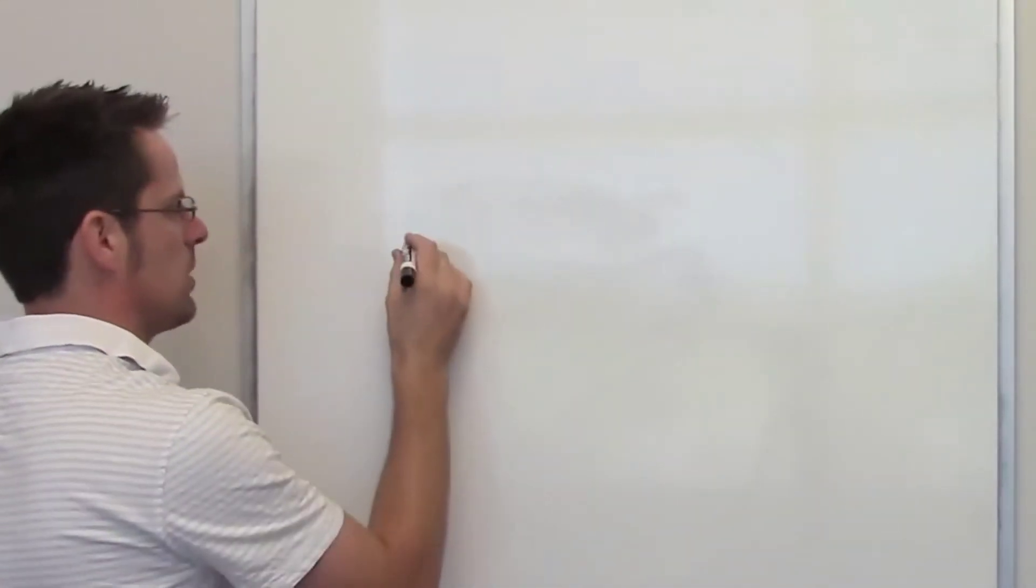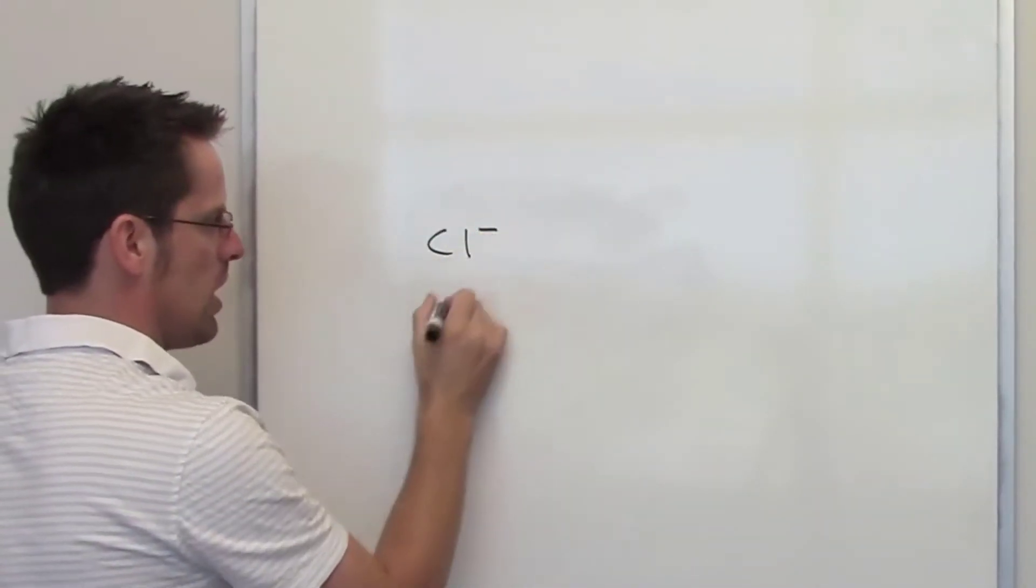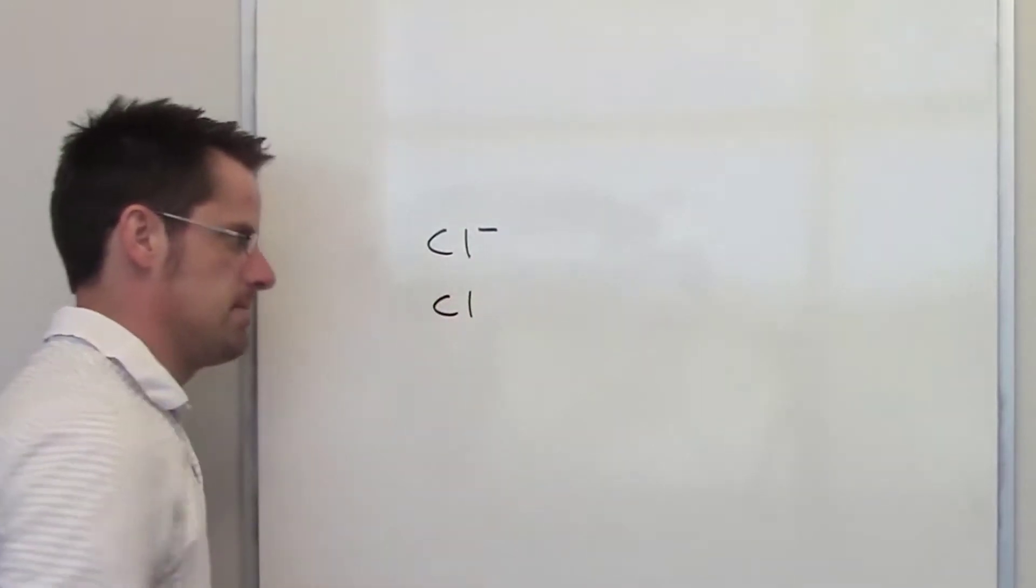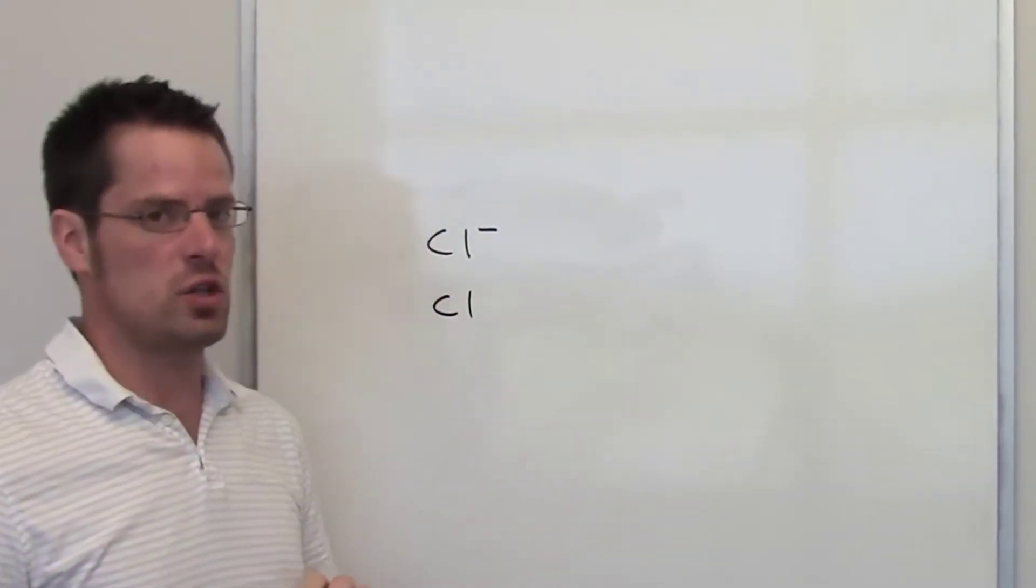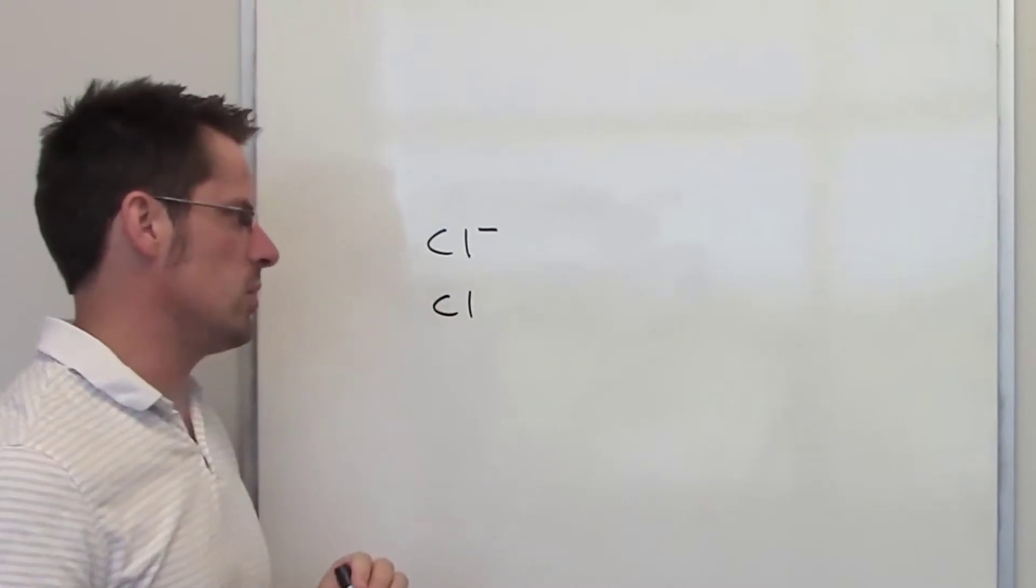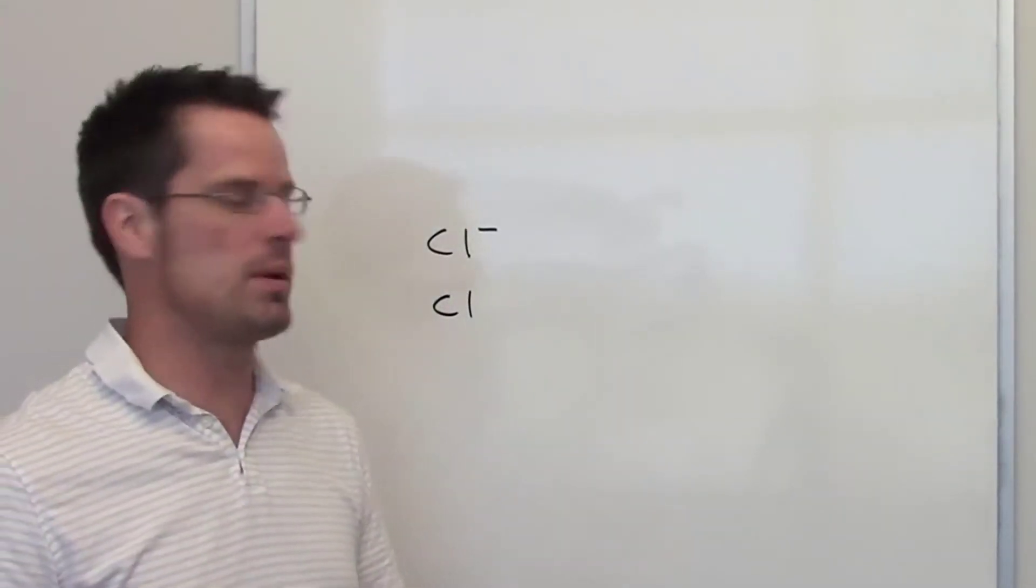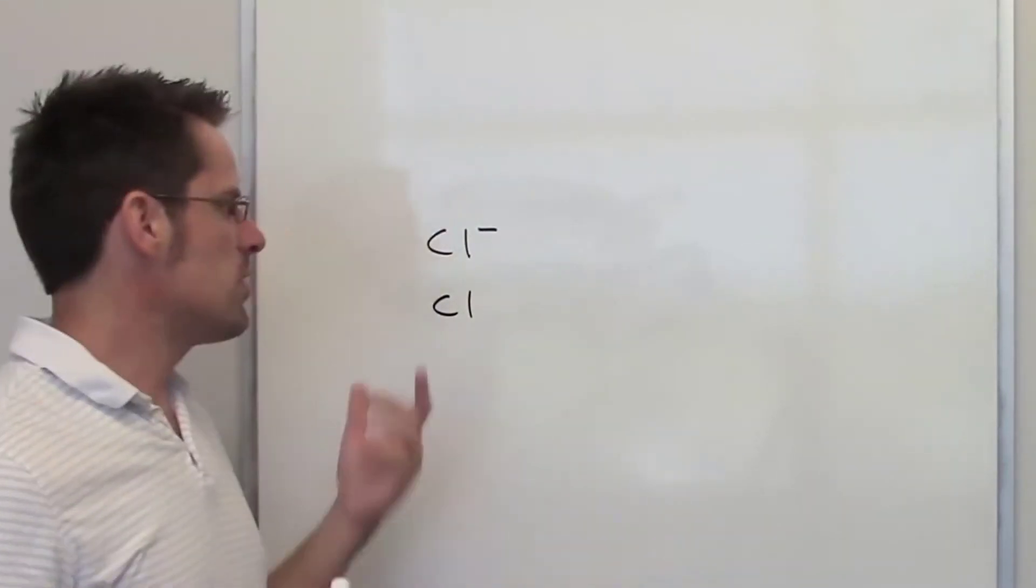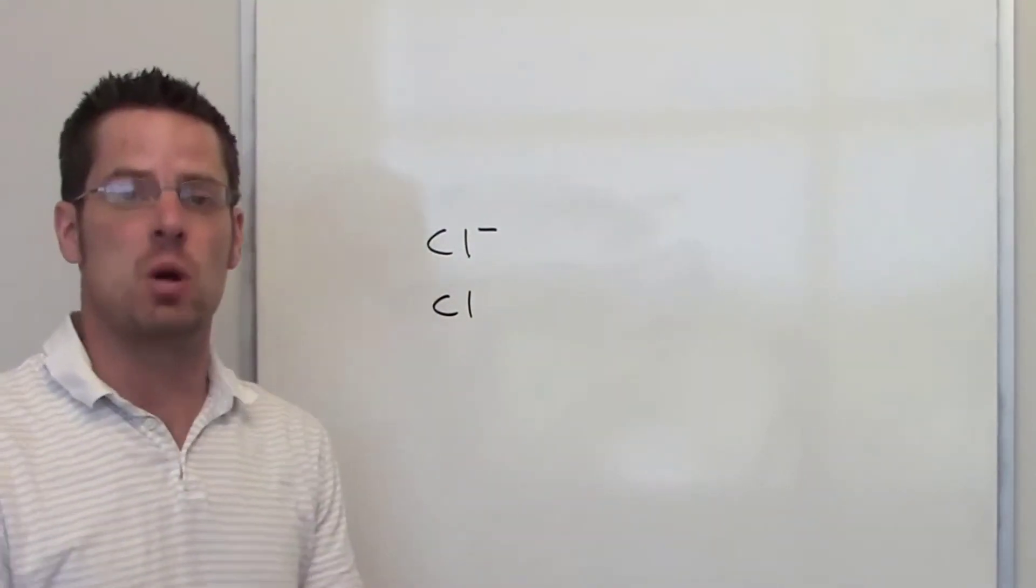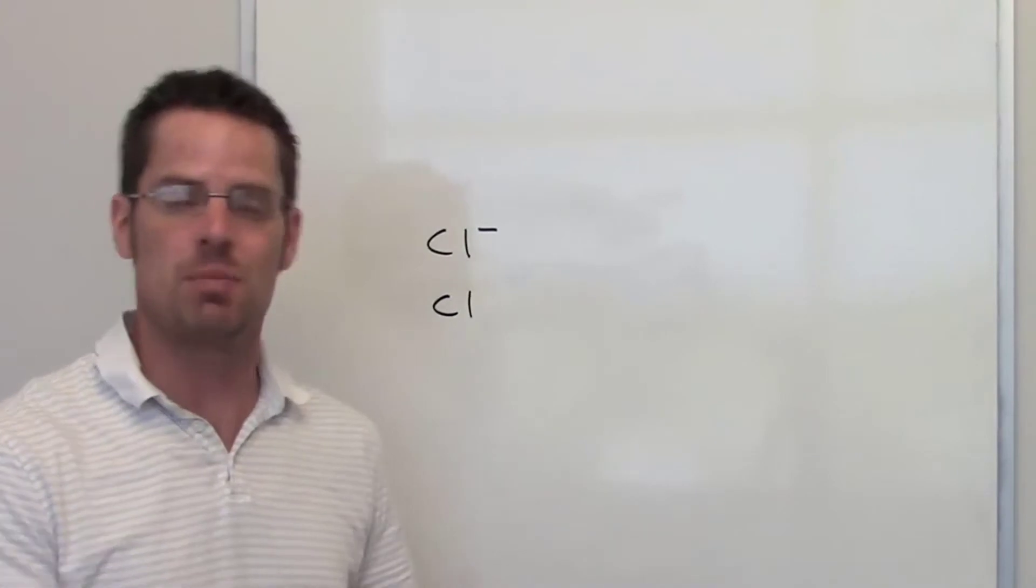In the second question, we're asked to compare chloride with chlorine. As far as size is concerned, there's very little difference between these two. Chloride with a negative charge has the same number of orbitals as neutral chlorine. Furthermore, these chlorines have the same number of protons in their nuclei, of course, because they're both chlorine atoms.